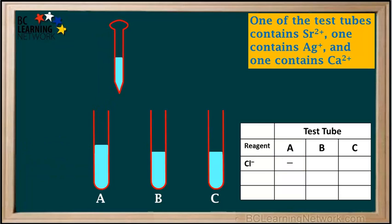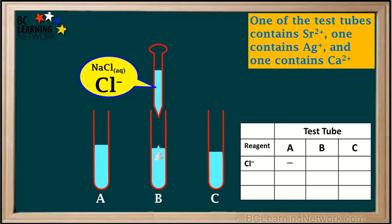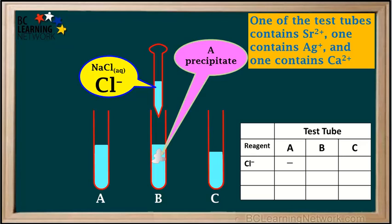Now we'll take the pipette out, refill it, and move it over to test tube B. We'll add the chloride solution to test tube B — watch what happens. A precipitate is formed. This is a compound with low solubility. To record this result, we write PPT for precipitate in the cell for chloride added to test tube B.